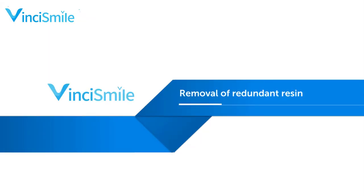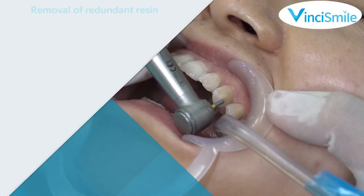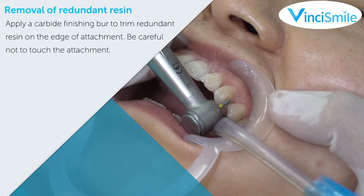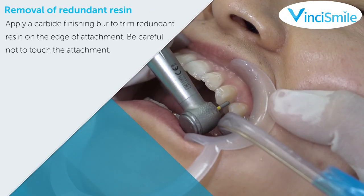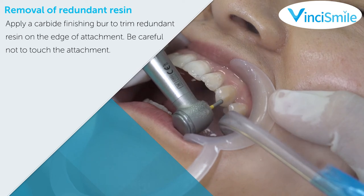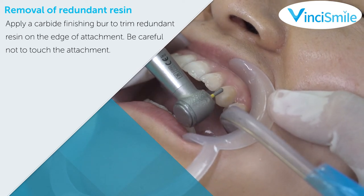Removal of redundant resin: apply a finishing bur to trim the redundant resin on the edge of the attachment. Be careful not to touch the attachment itself.